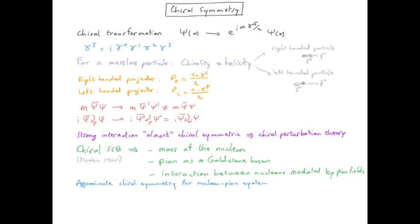If the symmetry was exact, the goldstone boson would be massless, but it turns out that the pion has a non-zero mass. It's light, about one order of magnitude lighter than the nucleon, nevertheless its mass is not exactly zero. Therefore, the chiral symmetry is only an approximate symmetry in nuclear physics.